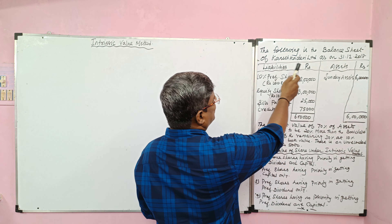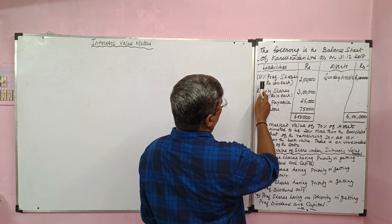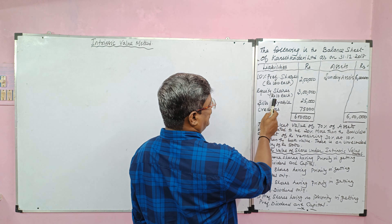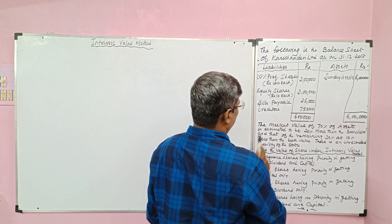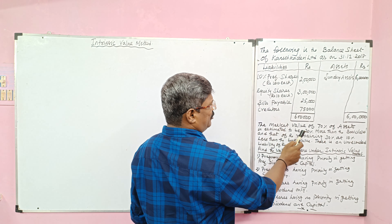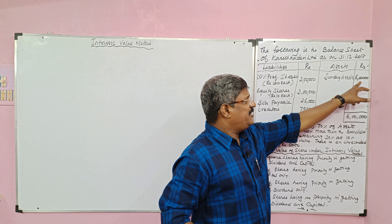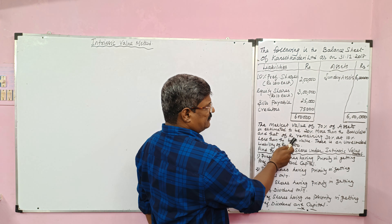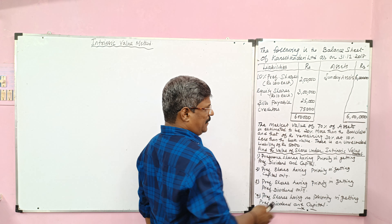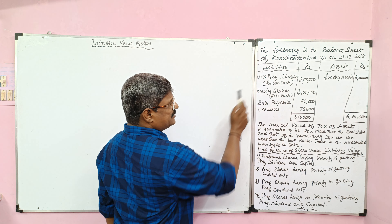Look at the problem. The following is the balance sheet of Tanishka Devi Limited as on 31st December 2018. On the liability side: 10% preference shares of rupees 100 each, total value 2 lakh; equity shares of rupees 10 each, total value 3 lakh; bills payable 25,000; creditors 75,000. On the asset side: sundry assets with book value 6 lakh. The market value of 70% of the assets is estimated to be 20% more than the book value, and the remaining 30% is at 10% less than the book value. There is an unrecorded liability of rupees 5,000. Find the value of shares under the intrinsic value method.